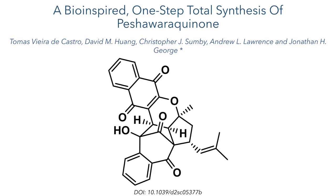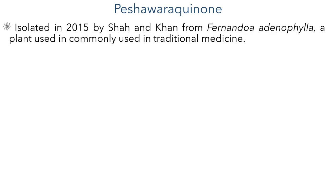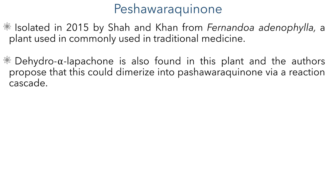This work was published by the George Group in the journal Chemical Science. Peshawara quinone was first isolated in 2015 by Shah and Khan from Fernandoa adenophylla, a plant that is commonly used in traditional medicine. This plant contains the compound dehydro-alpha-lapachone, and the authors propose that this could be the precursor to Peshawara quinone.